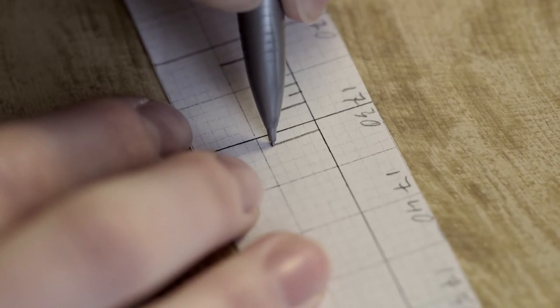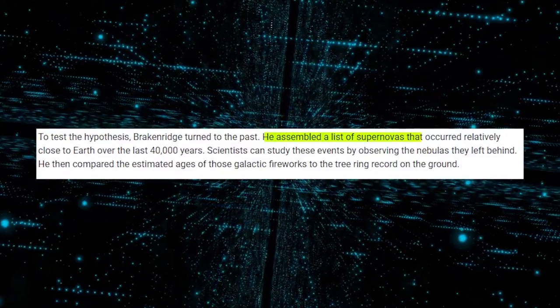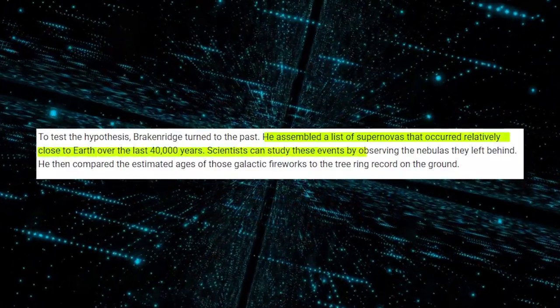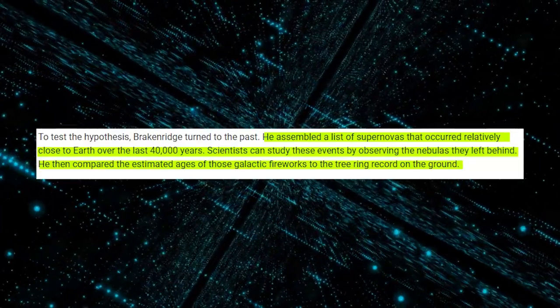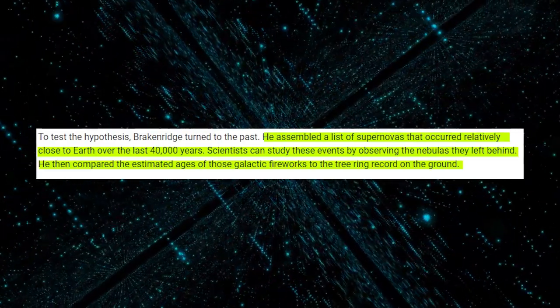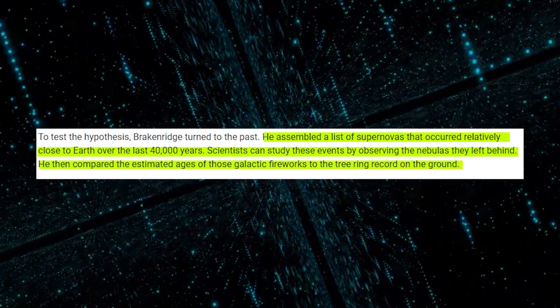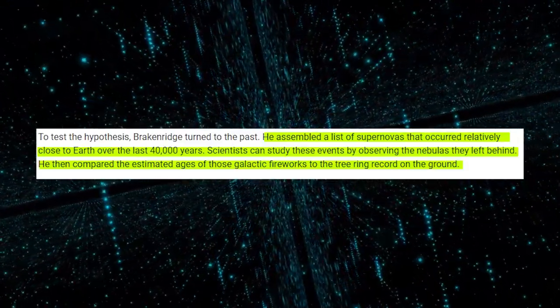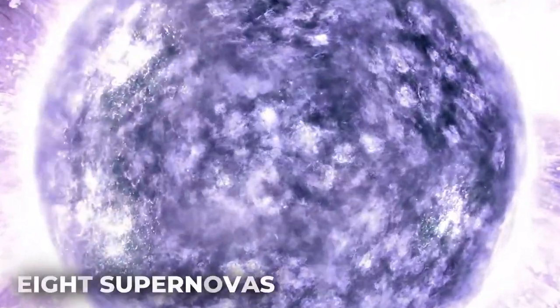Researchers look through the archives to determine the veracity of the supernova idea. They created a list of all known supernovae that have occurred in the past 40,000 years, and they were able to identify each one by the remnants of supernovae that were left behind in nebulae. Then they contrast this list with the data from the same period tree rings and radiocarbon spikes. How did they find out? Well, it appears that the radiocarbon spikes from eight supernovas nearest to the planet have matching periods.